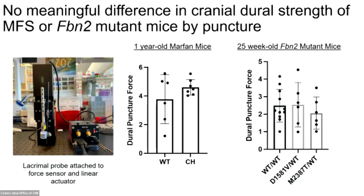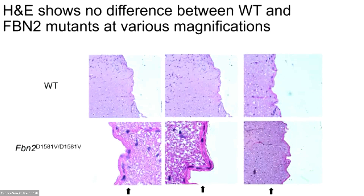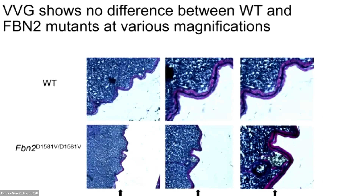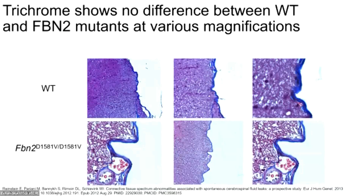Ideally we'd want to target the spinal dura, but that is extremely challenging. We turned to light microscopy to determine whether fibrillin 2 mutations cause differences in dural integrity appreciable histologically. We performed a variety of analyses and did not see any differences in H&E stain, VVG stain (which stains elastin black), or trichrome stain (where collagen is stained blue) between wild type and fibrillin 2 mutants. Notably, a prior study of human dura from patients with documented spontaneous CSF leaks also noted that the dura of these patients didn't appear different by microscopy.